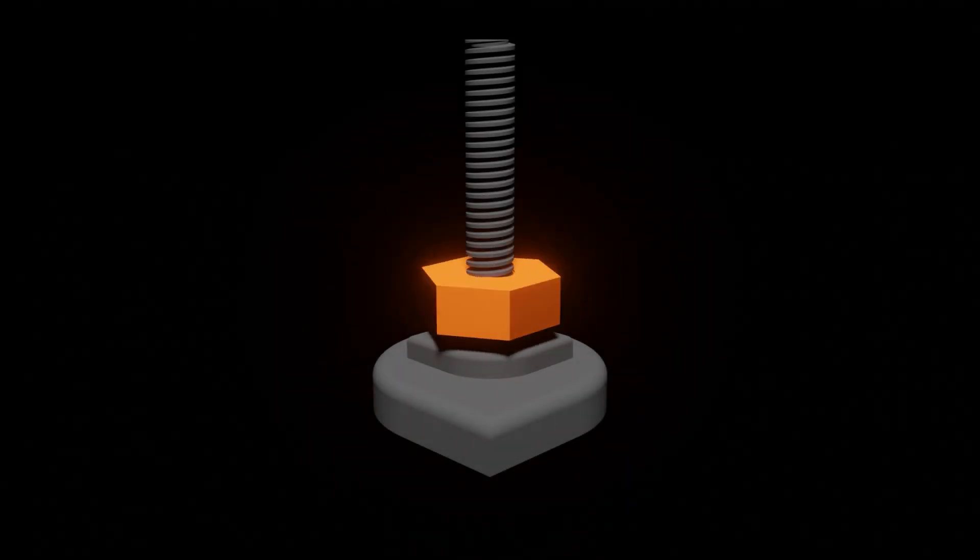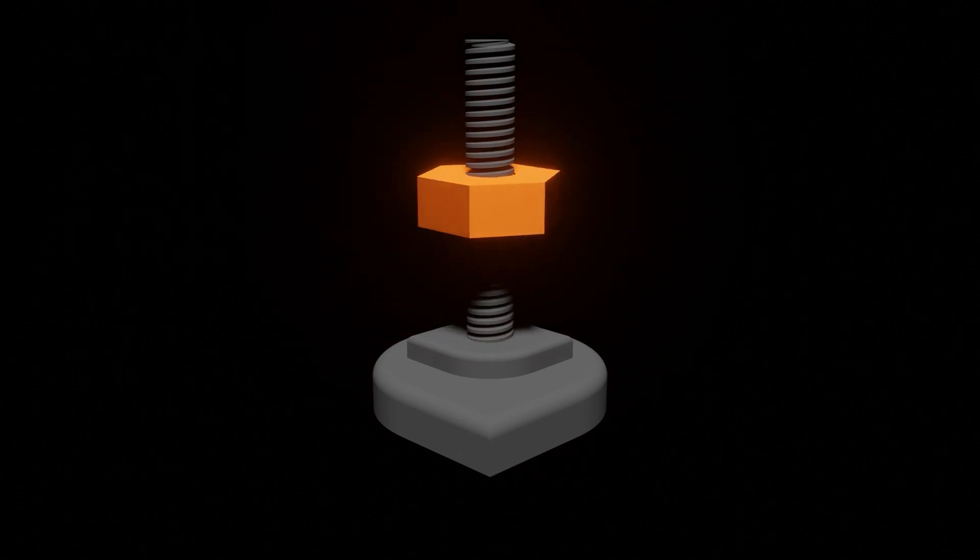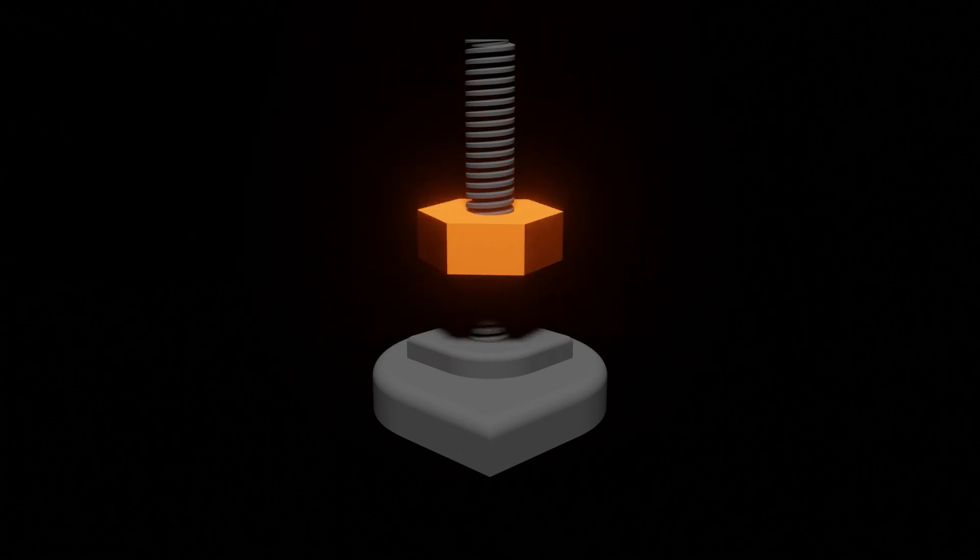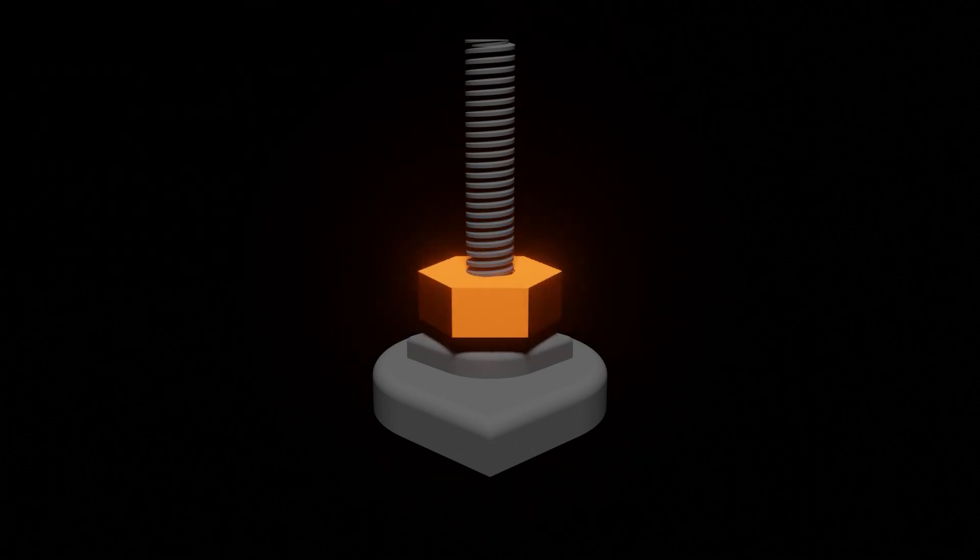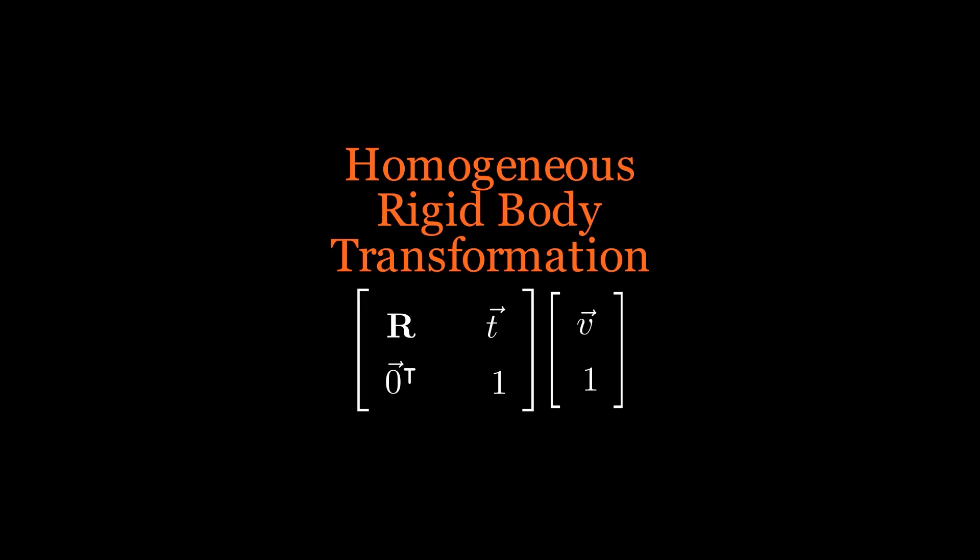Thinking about revolute and prismatic joints as the edge cases of a general helical joint and by moving to a higher dimension and abstracting out what happens in said higher dimension, we have arrived at a general transformation that incorporates rotation and translation in one operation and is called homogeneous rigid body transformation.